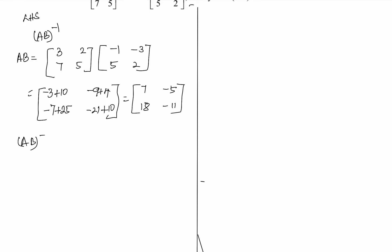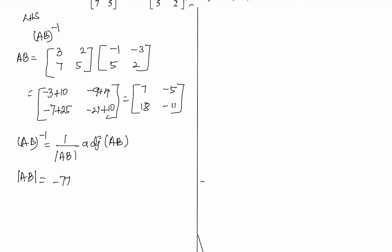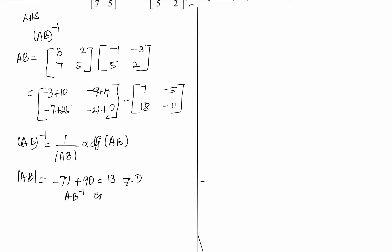Now (AB)⁻¹ equals 1 by |AB| into adjoint of AB. First, the determinant |AB| equals 7×(-11) - (-5)×18 = -77 + 90 = 13, which is not equal to 0. So (AB)⁻¹ exists.